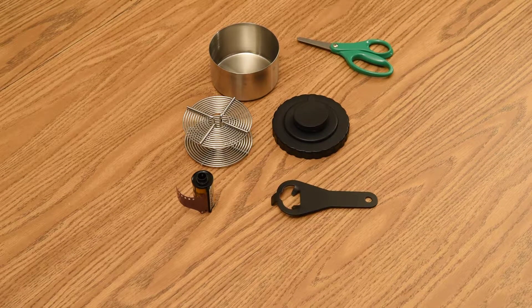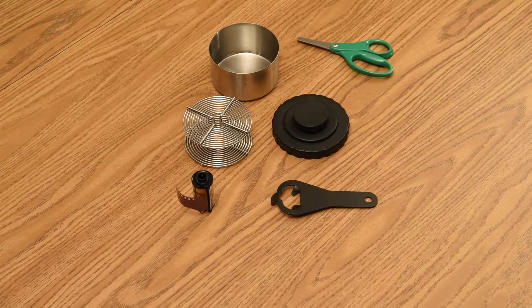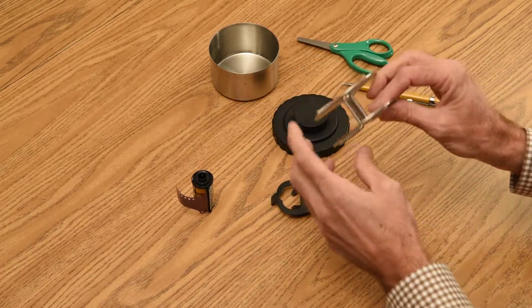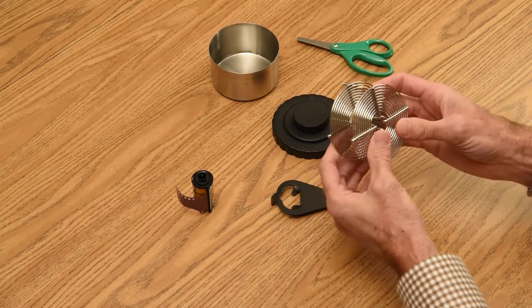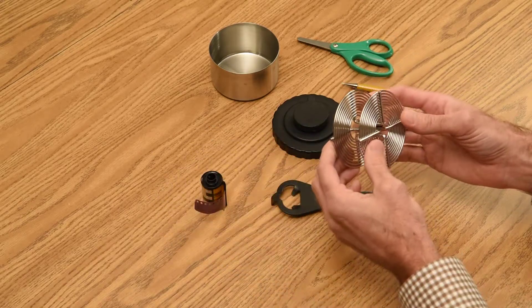In this demonstration, I'm going to show you how to roll film onto a processing reel. I'm going to use a steel processing reel, and this is a 35mm processing reel, the kind of reel you use 35mm film on, in this case black and white film.